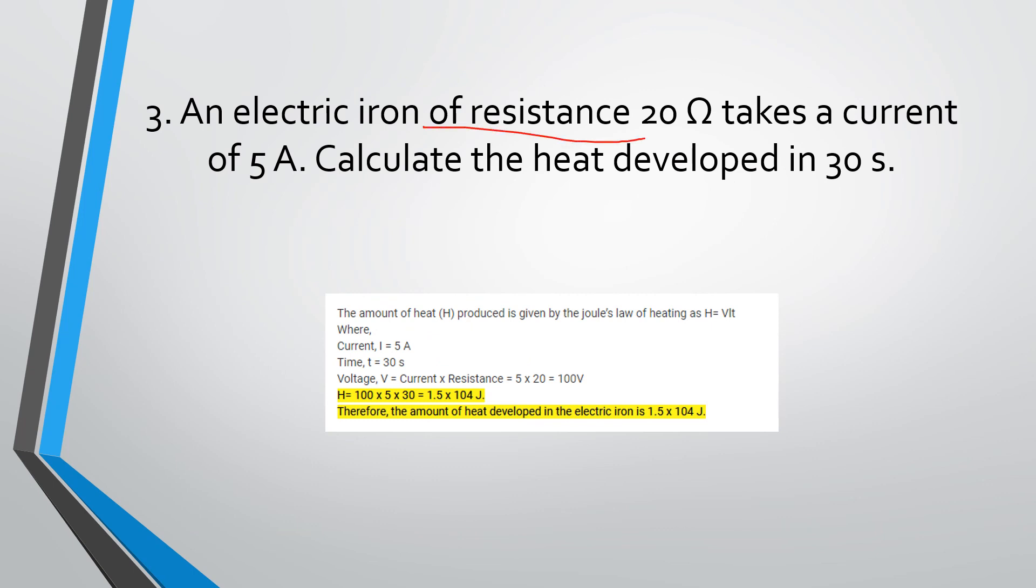An electric iron of resistance 20 ohms takes a current of 5 amperes. Calculate the heat developed in 30 seconds. The amount of heat produced is given by Joule's law of heating, H equals VIT. We have current, time, and voltage. Substituting directly, you will get the value 1.5 times 10 to the power of 4 joules. Hence, the amount of heat developed in the electric iron is 1.5 times 10 to the power of 4 joules.